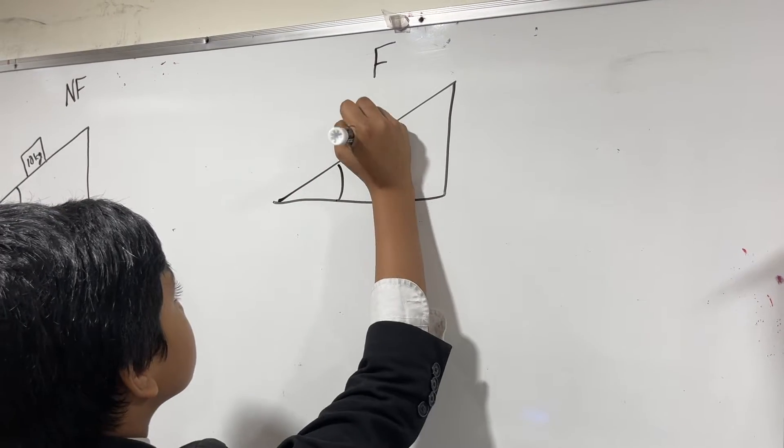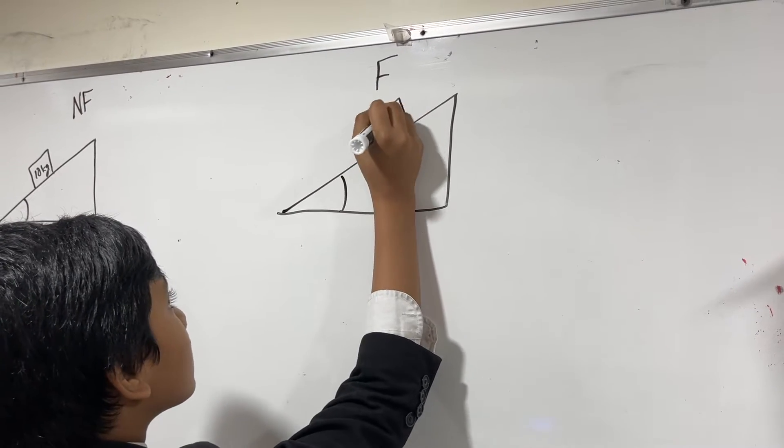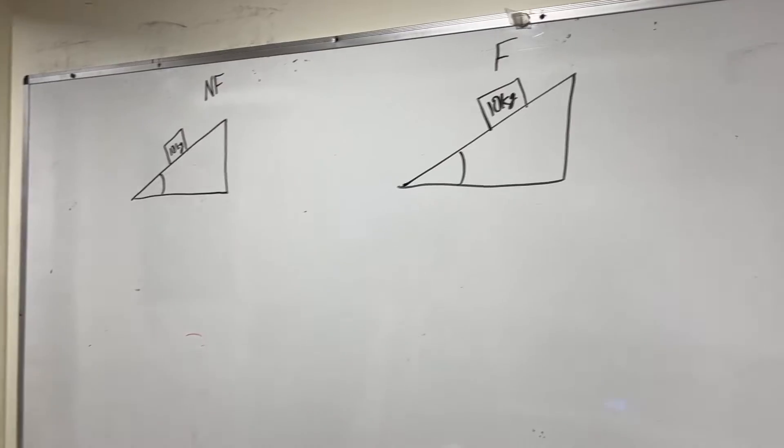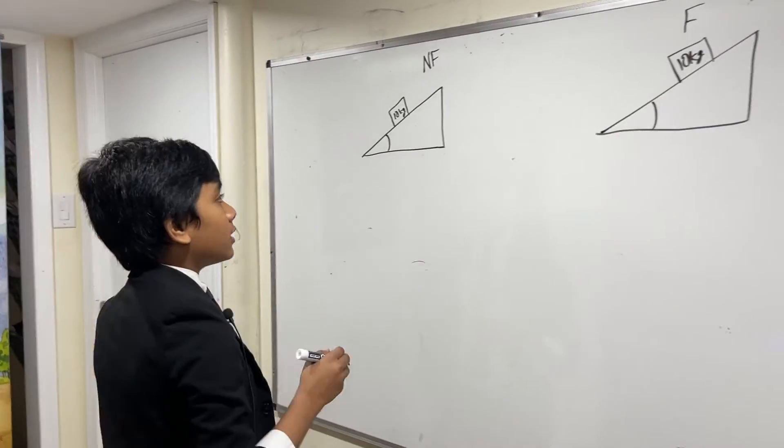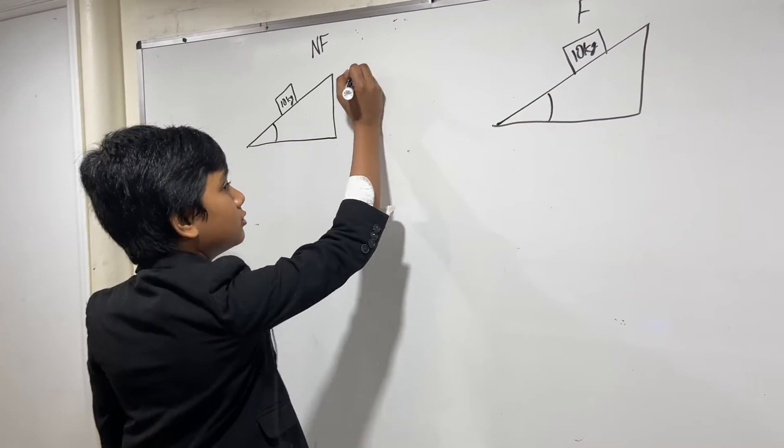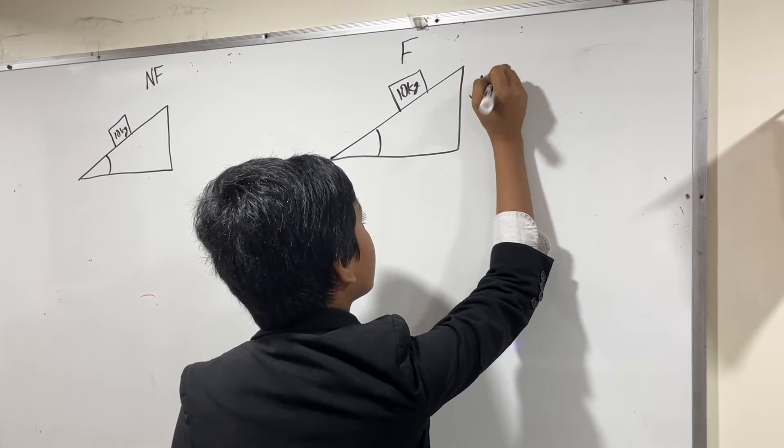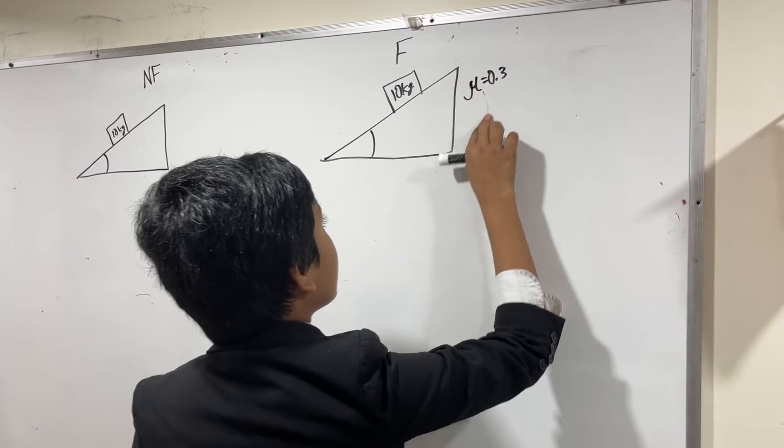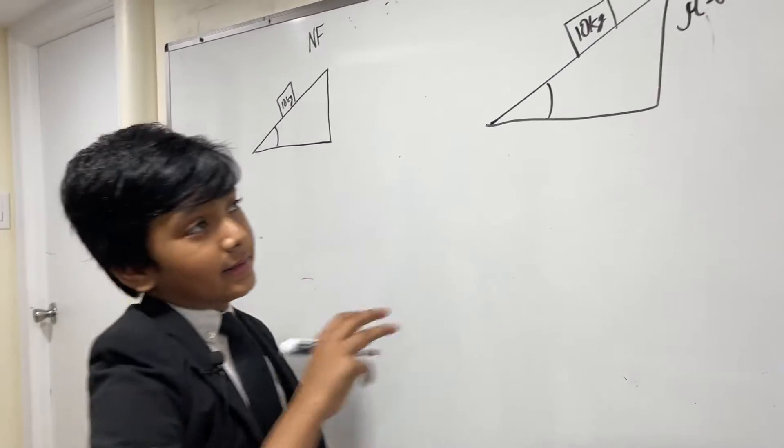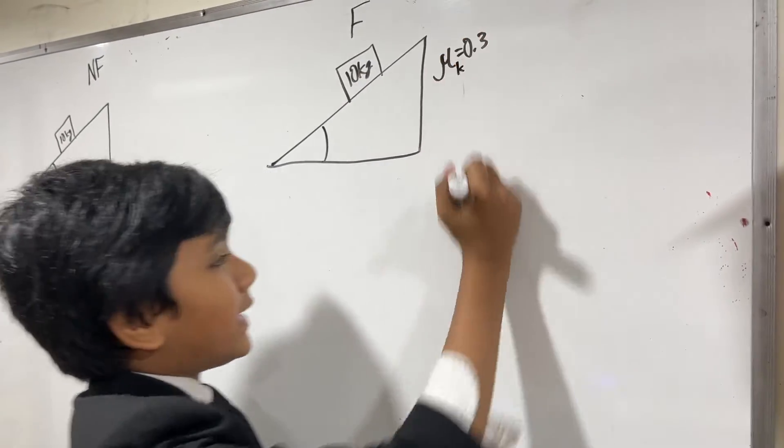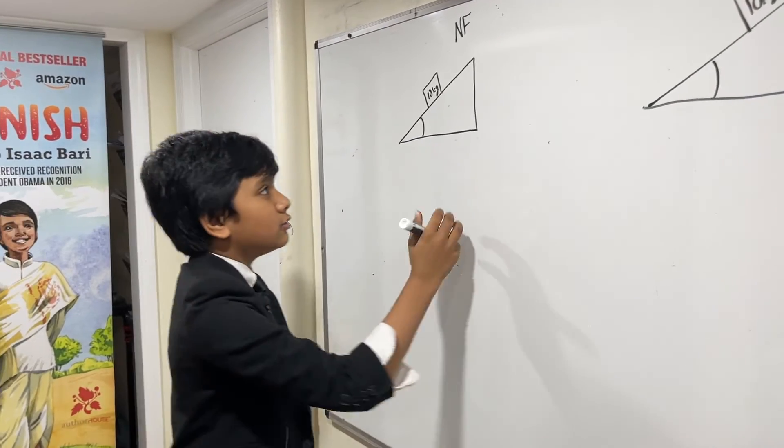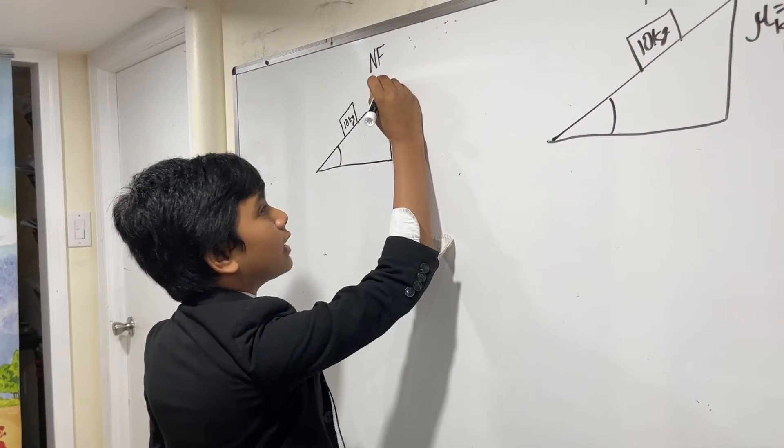So let's also just draw that. And what we're going to do is we're going to note down this. Mu is 0.3 in this case. And in this case, that mu is mu k. And here we have no friction.